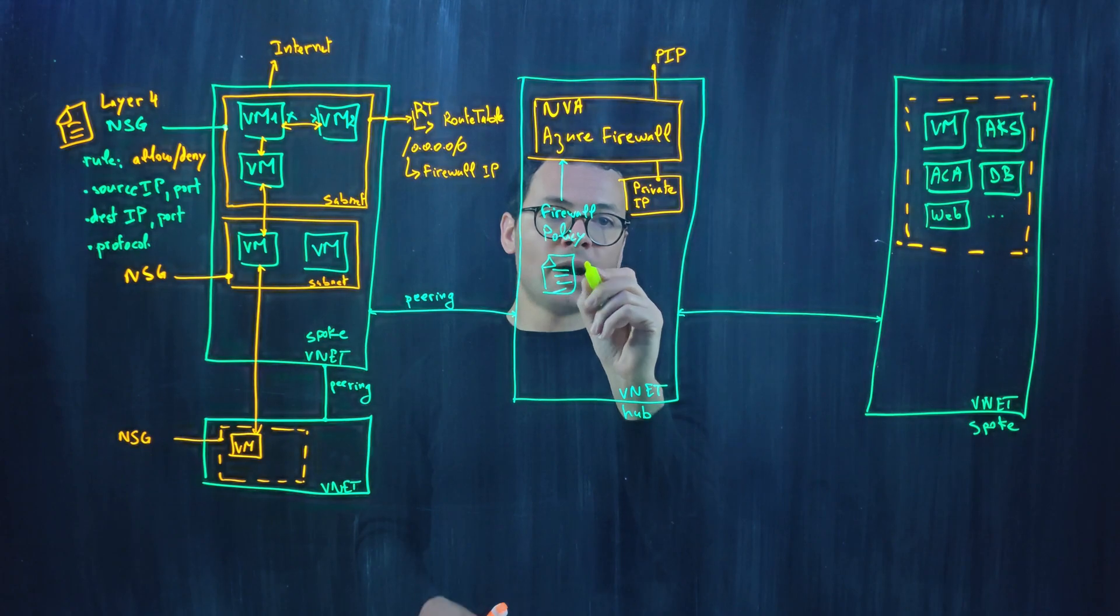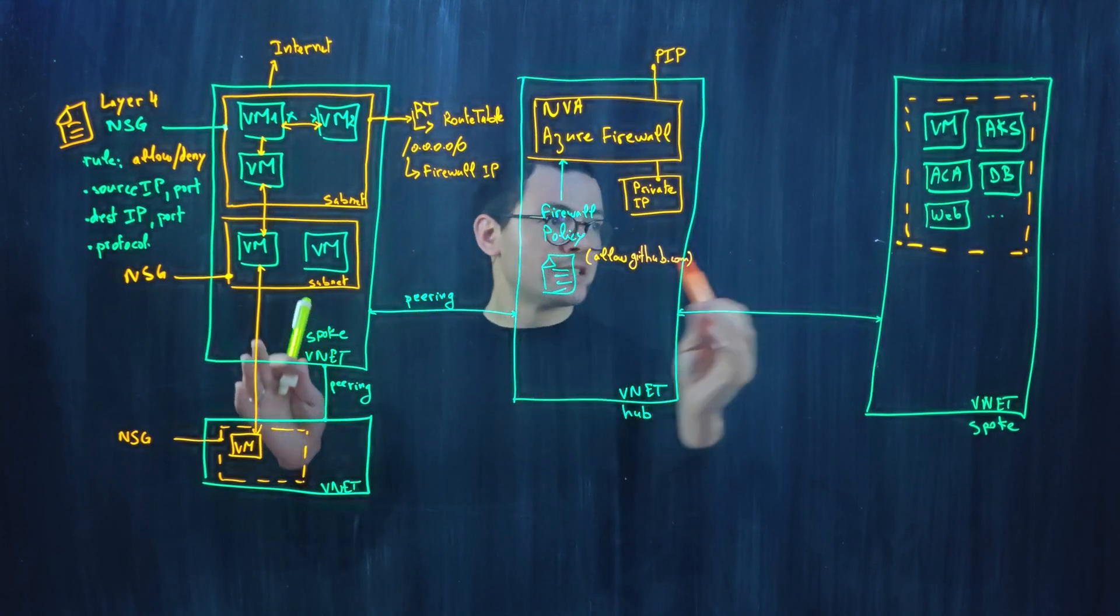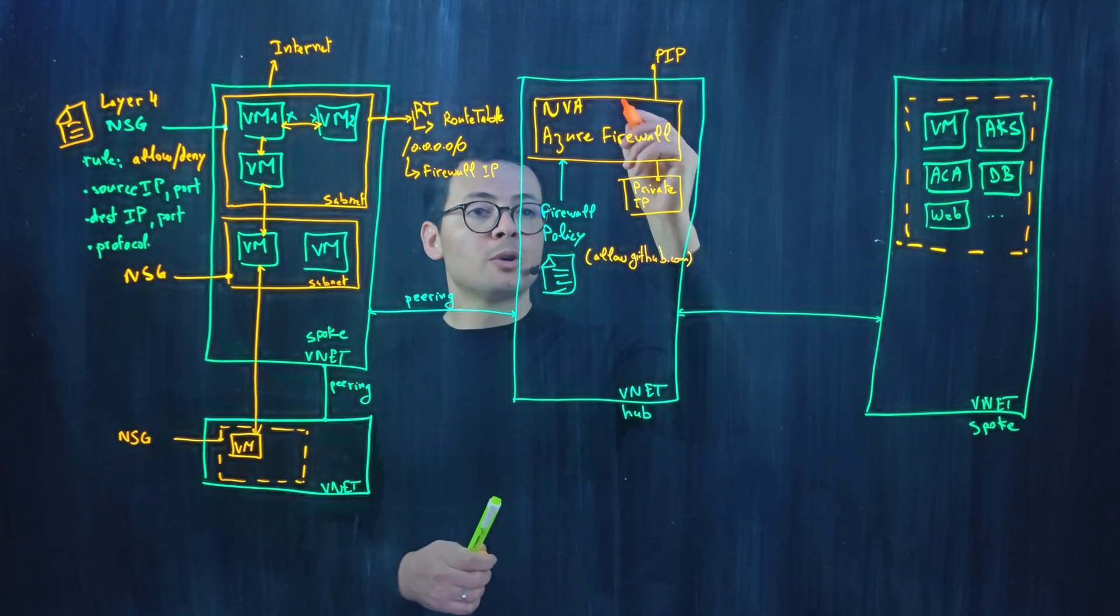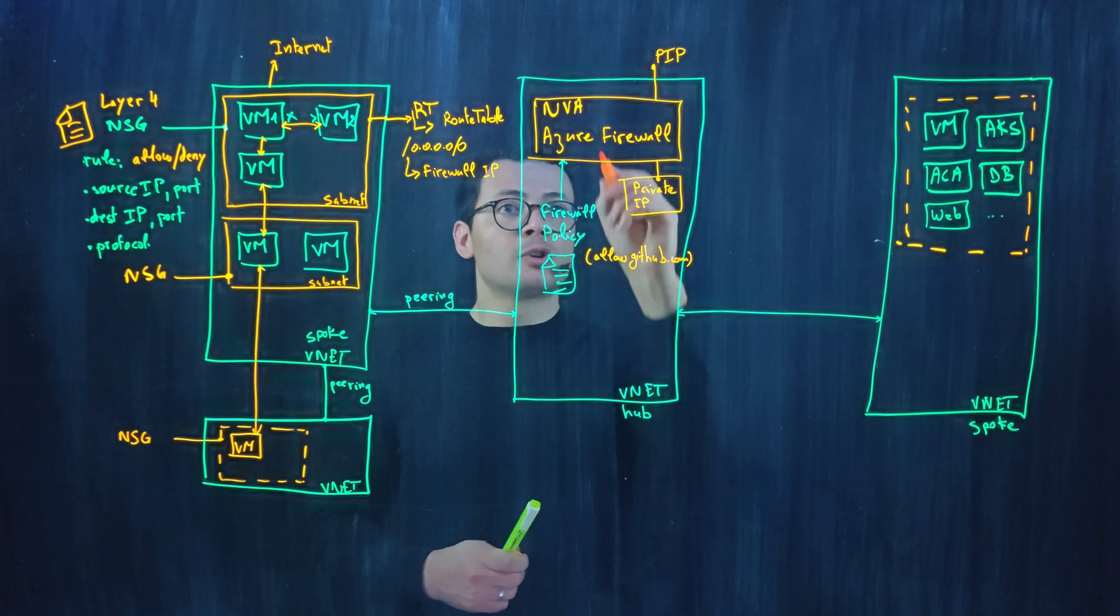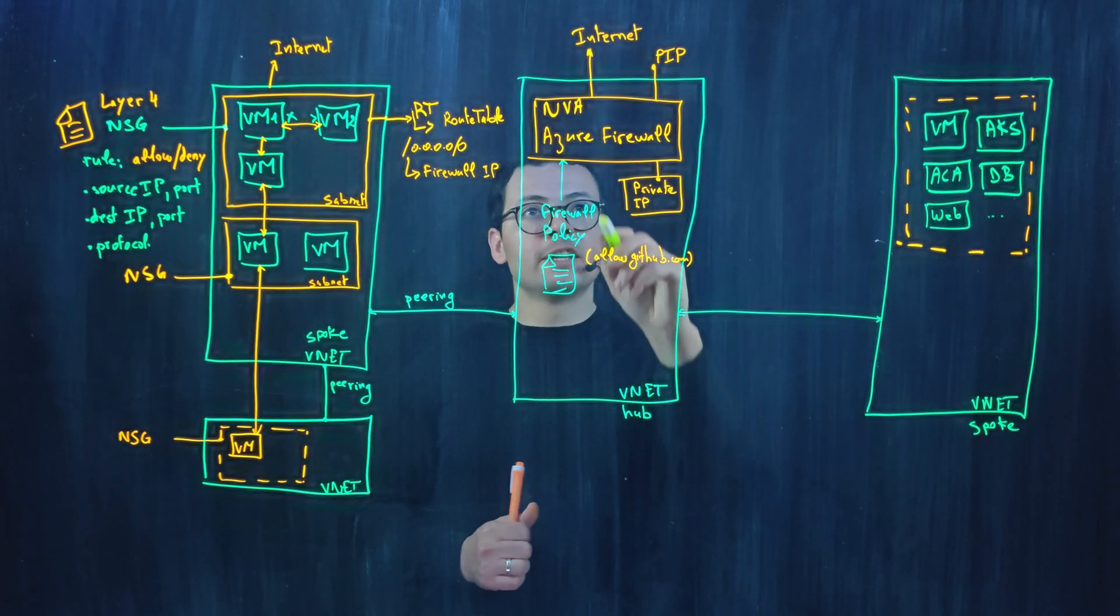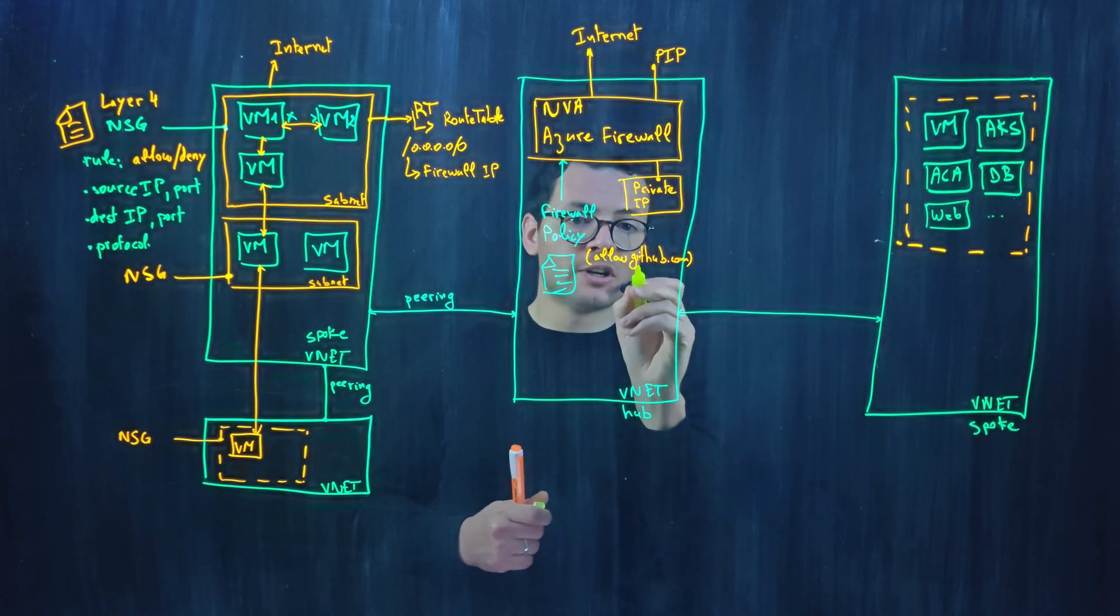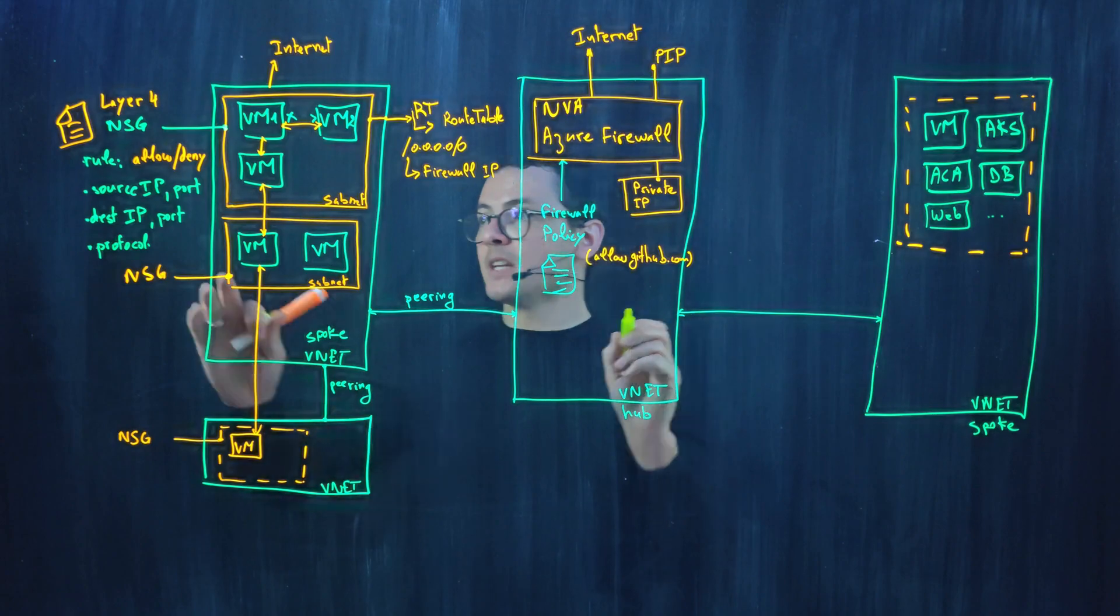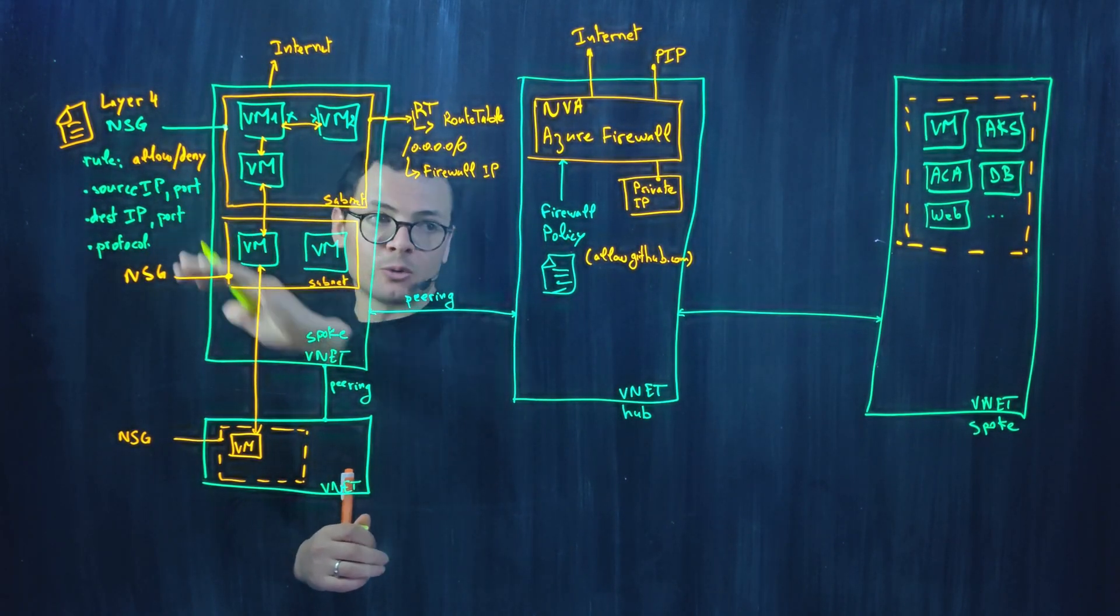For example, that say allow access to github.com. So that all the egress traffic that wants to access github.com will be allowed and it will go to github.com through the Azure firewall. So it can filter the egress traffic that is going to the internet through the FQDN. Note here how we are specifying github.com instead of relying on an IP address like what we do with an NSG network security group.